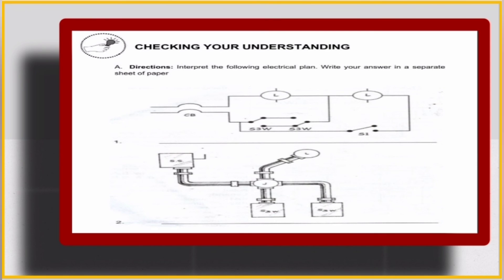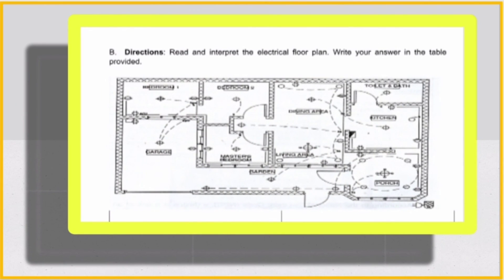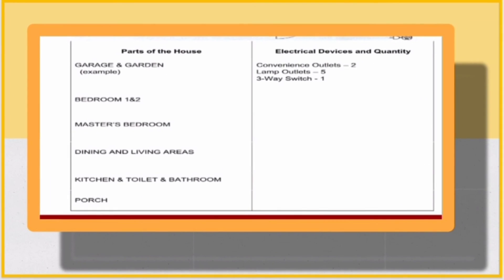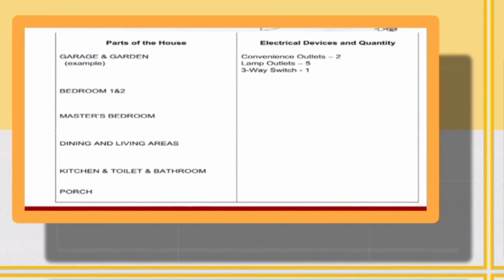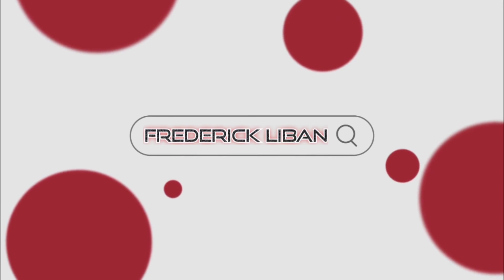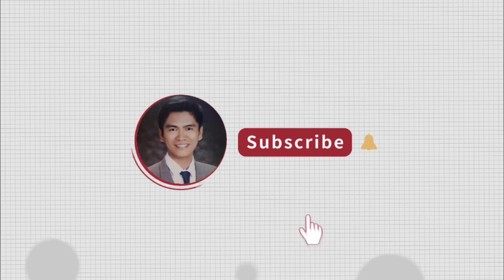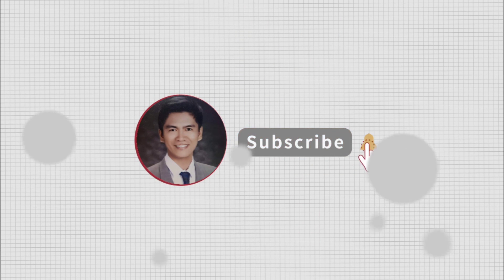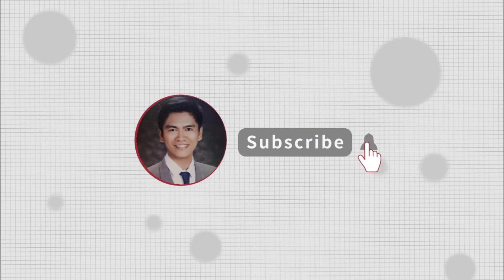Interpret the following electrical plan and write your answer on a separate sheet of paper. In letter B, read and interpret the electrical floor plan and write your answer on a sheet of paper. Submit or turn in the picture of your answer in our Google Classroom. This ends our lesson. Thanks for watching, and if you want to be updated on my lessons, click the subscribe button. Thank you.